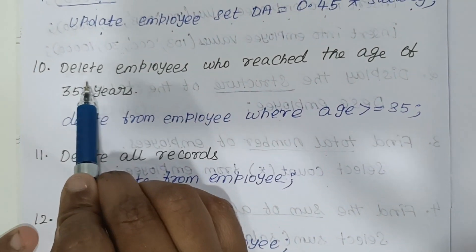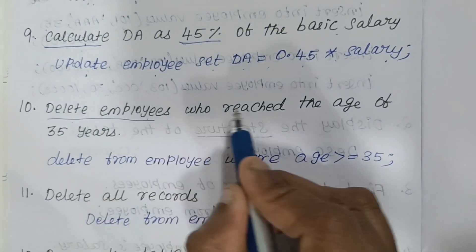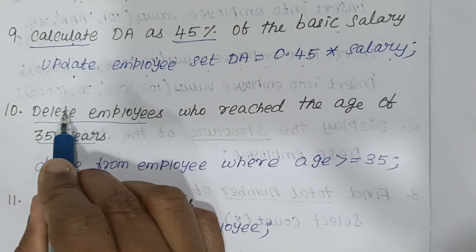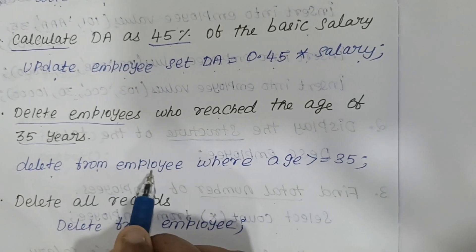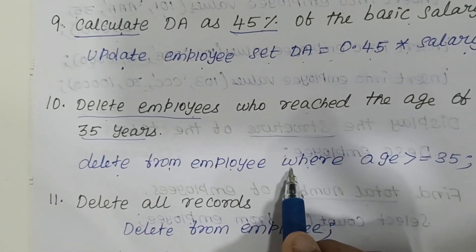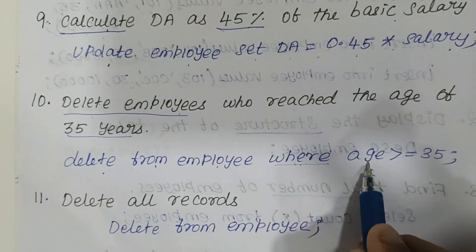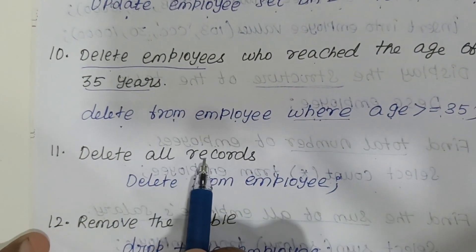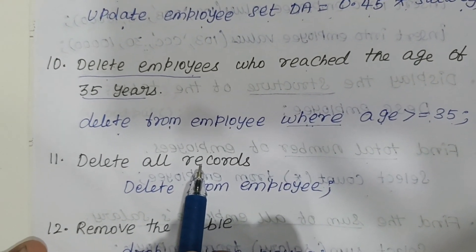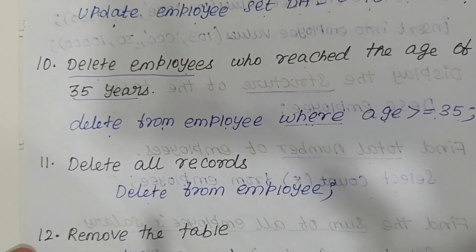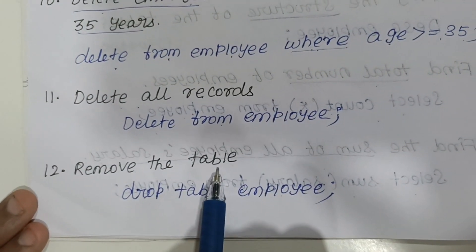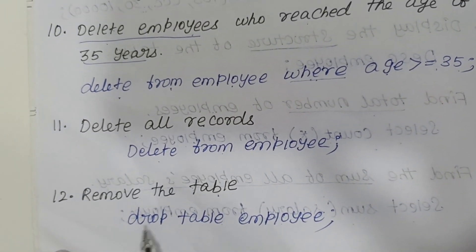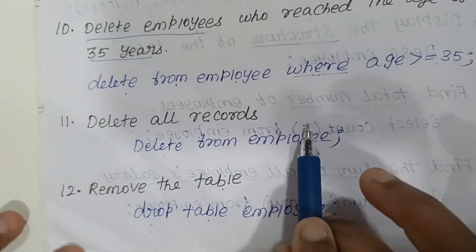To delete employees who have reached age 35: use DELETE FROM employee WHERE age >= 35. Whenever a condition is given, add the WHERE clause. If they ask to delete all records with no condition, write DELETE FROM employee. To remove the table completely from the database, use DROP TABLE employee.